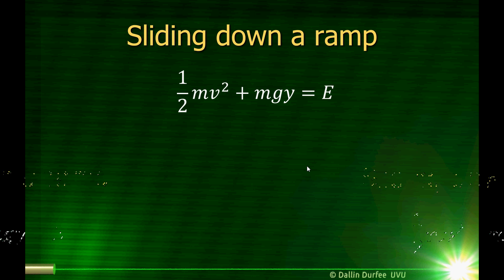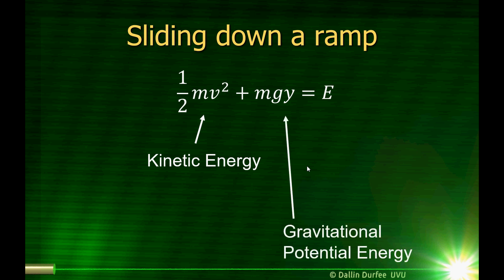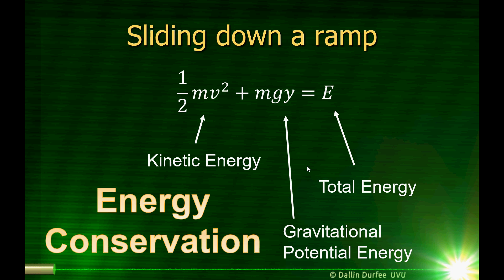So as the thing slides down the ramp, one-half mv squared plus mgy is equal to a constant, and we're calling that constant E. This term in front, one-half mv squared, is what we call the kinetic energy. The next term, mgy, is what we call the gravitational potential energy, and E is what we call the total energy. By letting this equal E and calling that energy, what we're taking advantage of is something called energy conservation. The idea is we have these two things that contribute to the total energy, and energy is conserved — because when we derived it, we found that E had to be a constant.